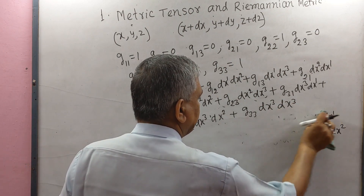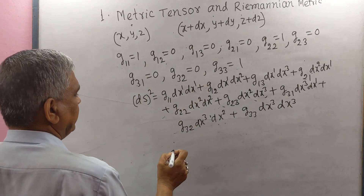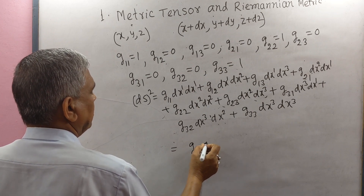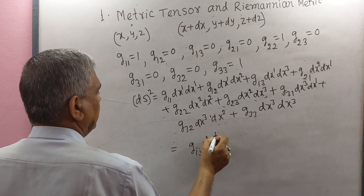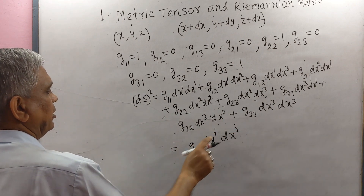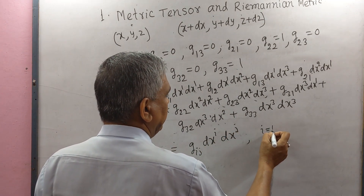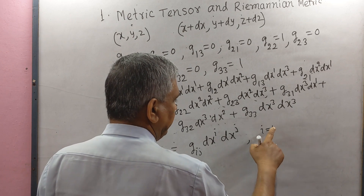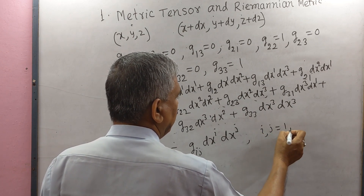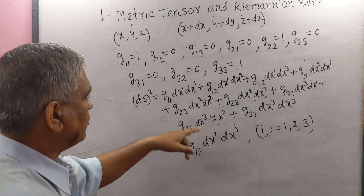Using the dummy suffix, we may write the right side as g_IJ · dxI · dxJ, where I is a dummy suffix and J is a dummy suffix. The value of I equals 1, 2, 3 and the value of J equals 1, 2, 3 — giving 9 terms in total. So ds² can be expressed as g_IJ · dxI · dxJ.